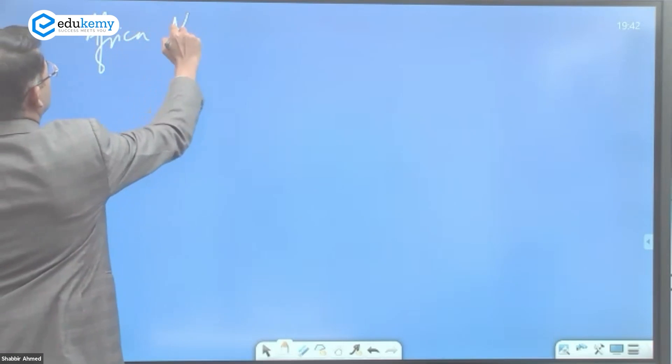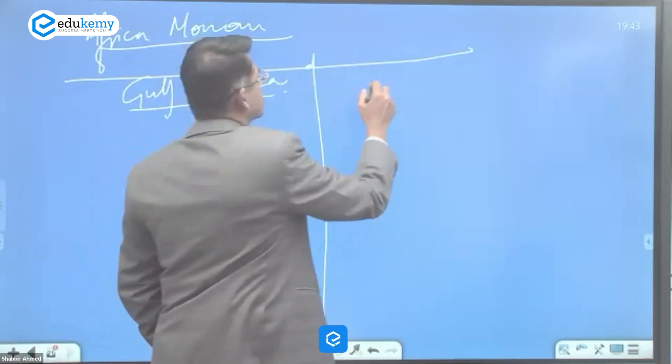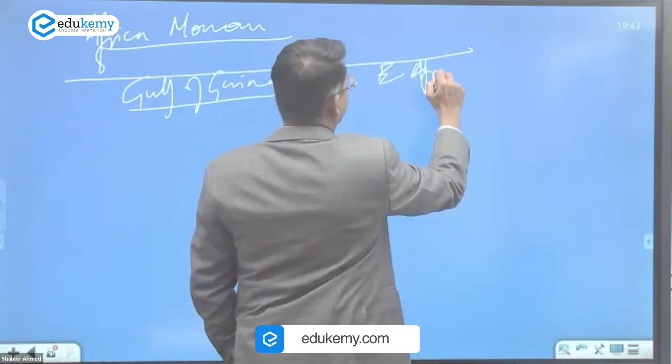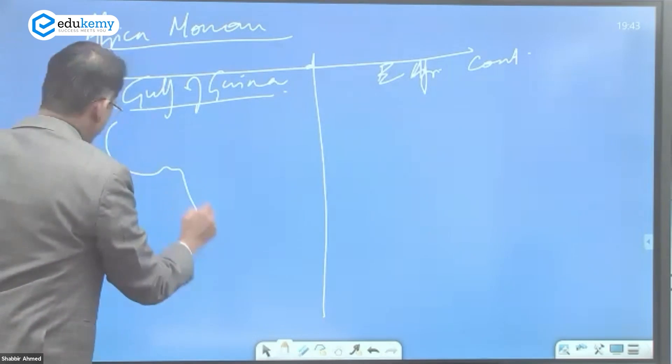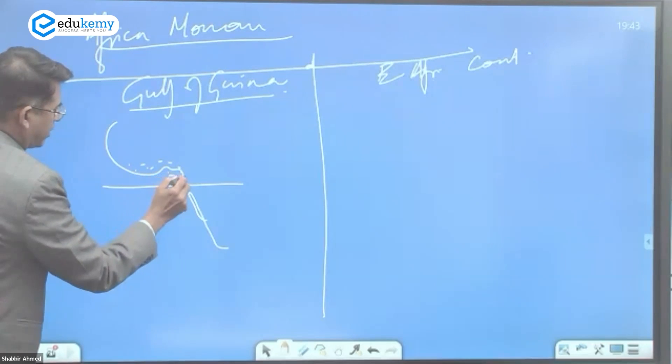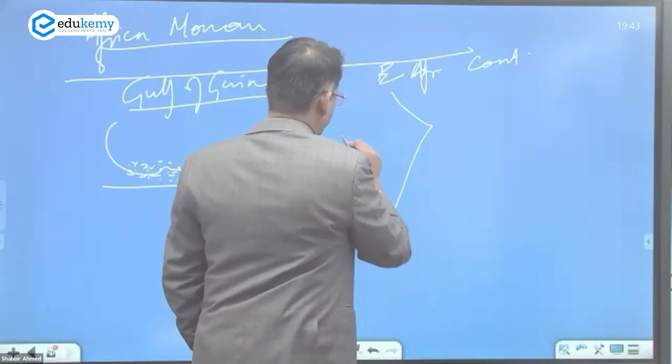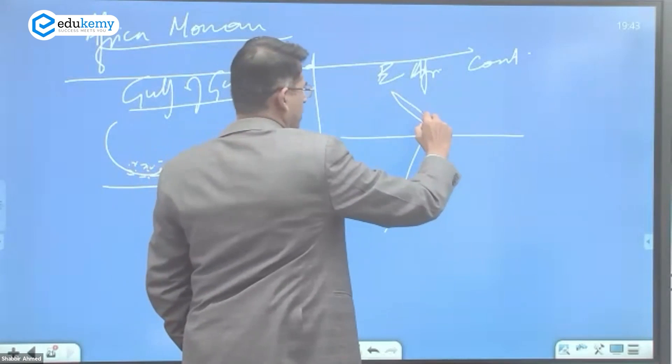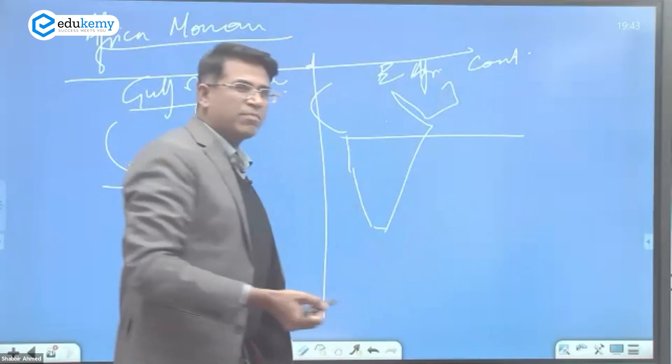Let me explain this to you. African monsoon - one is Gulf of Guinea, another we'll discuss is the East African coast. So Gulf of Guinea and East African coast.